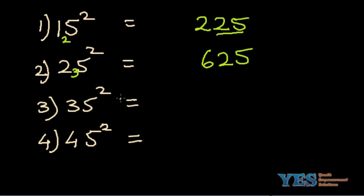Let's try the square of the number 35. The last two digits will always be 25. Next you take this number 3, increase by 1 to get 4. 4 into 3 gives you 12. The next number is 45 square. Again 25. Now when you increase 4 by 1 you get 5. 5 into 4 gives you 20.